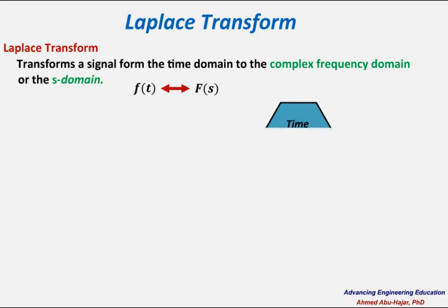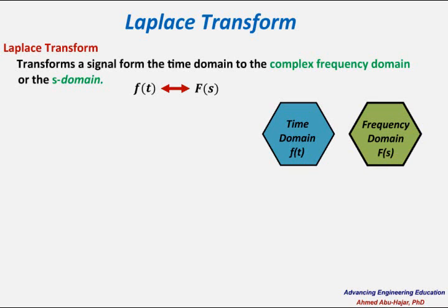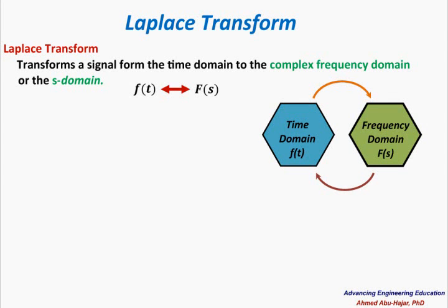So if you have a signal in the time domain, you are going to convert it to what we call the S domain or the complex frequency domain. Under some conditions this is called one-to-one mapping, which means each signal f of t will have one equivalent signal F of s. That means f of t and F of s represent the same signal — you are just looking at it from different angles.